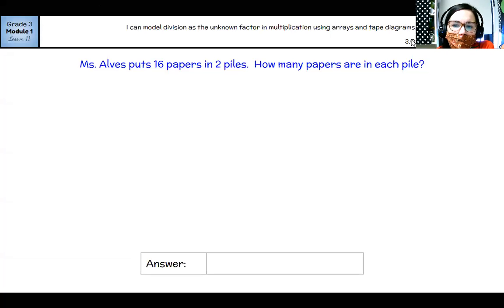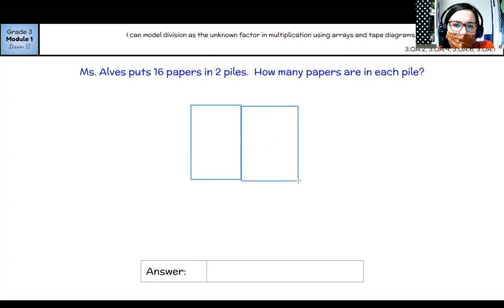All right. Let's try it with a different number. So Ms. Alves put 16 papers into two separate piles. So let's think about what do we know. We know that there are two piles. So one, two, there are two piles and there are 16 papers. So I'm going to fair share the 16 papers between these two groups.